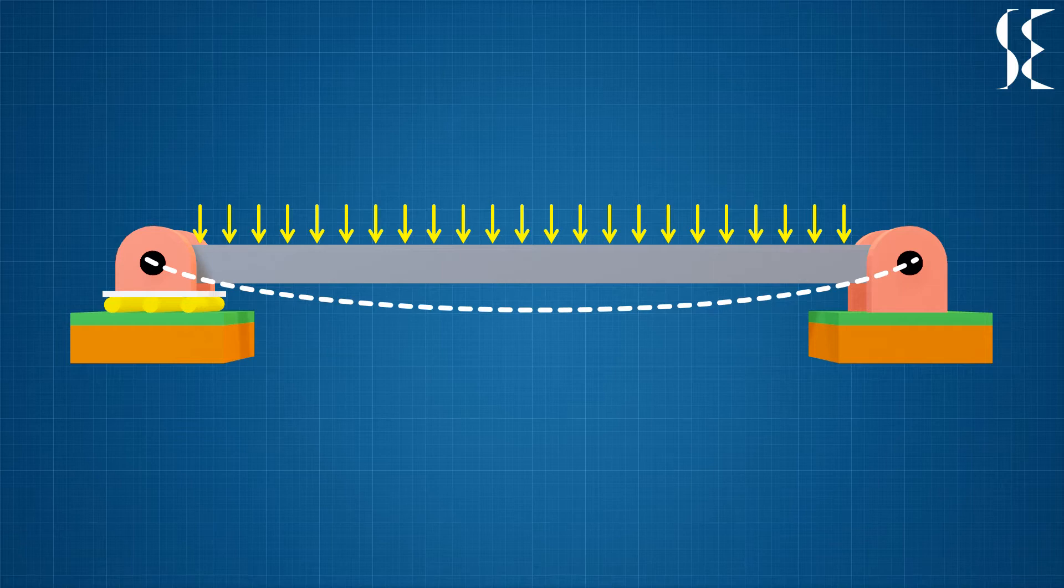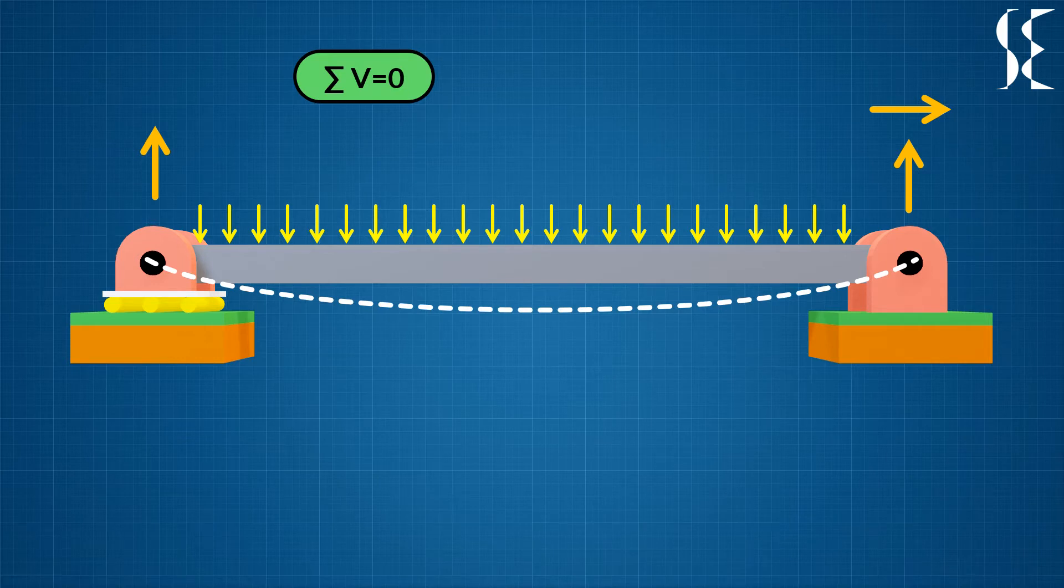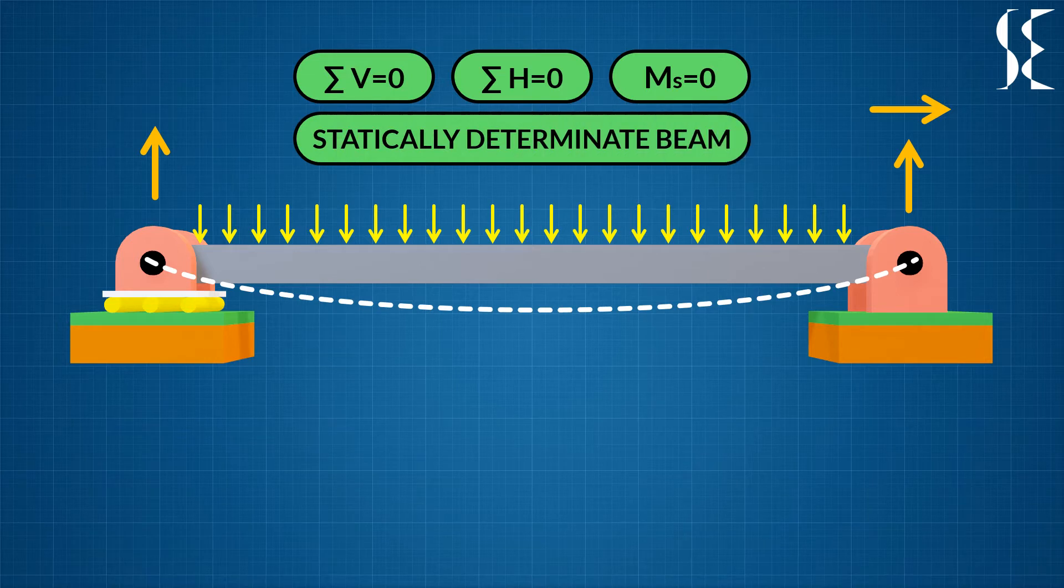This beam has got 3 unknown reactions which are vertical reactions at both the supports and horizontal reaction at pin support. We have 3 equilibrium equations: summation of forces in vertical direction is 0, summation of forces in horizontal direction is 0, and moment about any of the support is 0 to find 3 reactions. Hence, it is called a statically determinate beam.